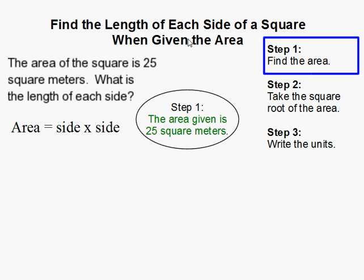The first thing you have to do is you have to be given the area or somehow find the area. In this problem we're given the area which is 25 square meters. So now what we have to do is find the length of each side.